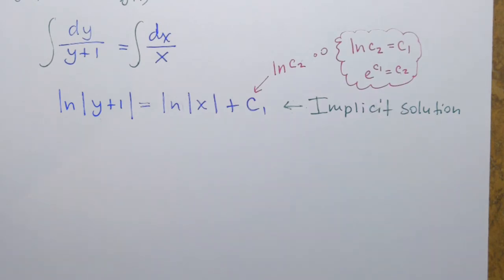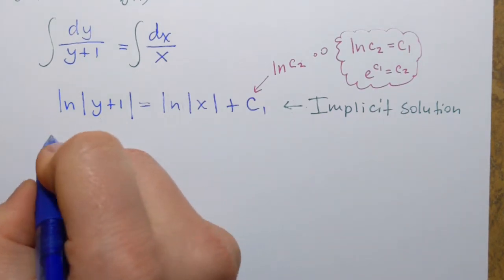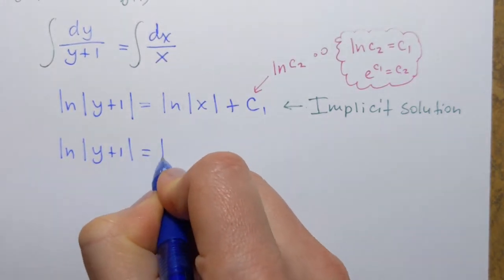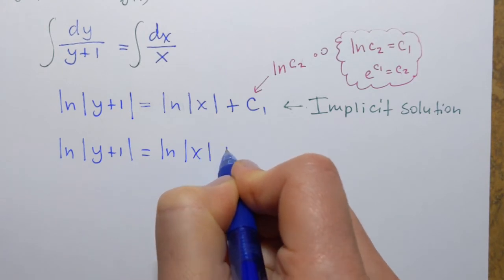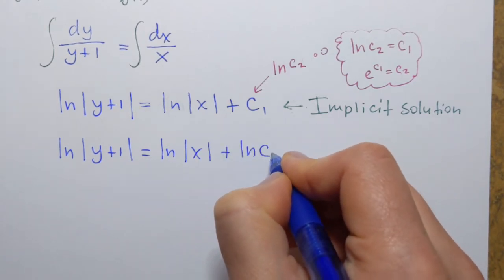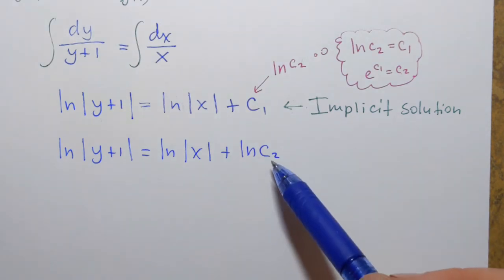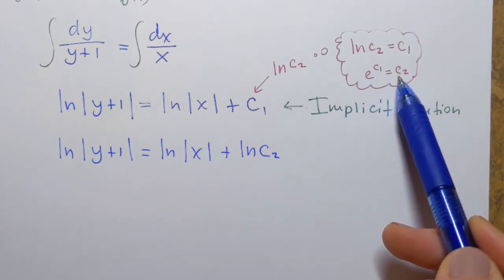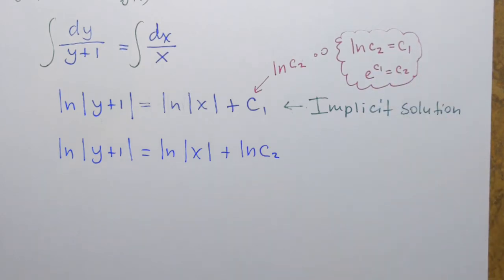Okay so that's how I'm going to rewrite my function. ln|y+1| = ln|x| + ln(C2). Here I don't have to use absolute value since it's a constant. And I know it's guaranteed to be positive because positive base raised to any power is always positive.